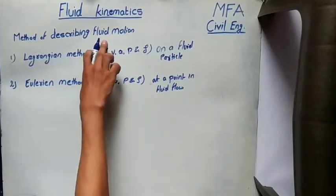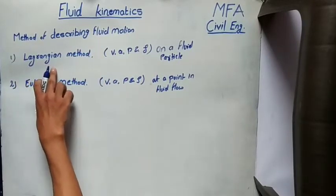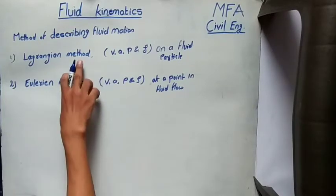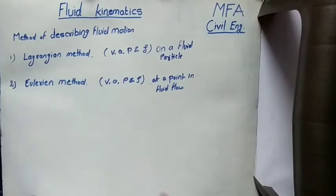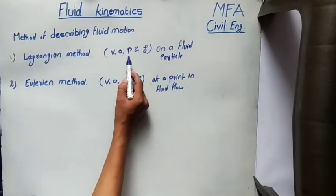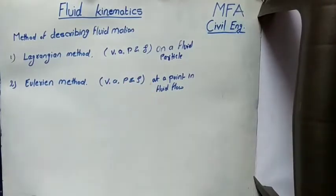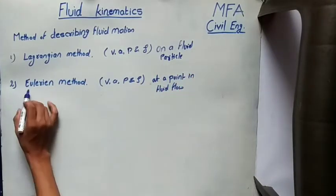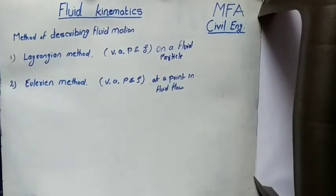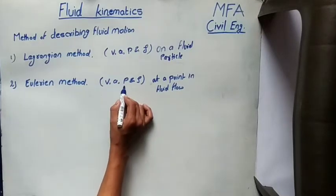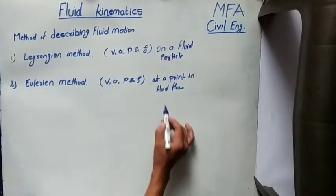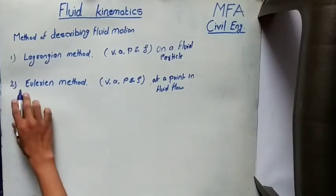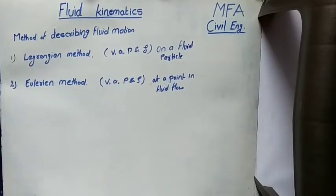Fluid motion can be described by two methods. One is the Lagrangian method and the second is the Eulerian method. In the Lagrangian method, a single fluid particle flowing in the fluid flow is considered, and properties like velocity, acceleration, pressure, and density are described on that fluid particle. In the Eulerian method, properties like velocity, acceleration, pressure, and density are described at any point in the fluid flow. The Eulerian method is the most commonly used method to describe fluid motion in fluid mechanics.